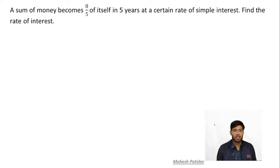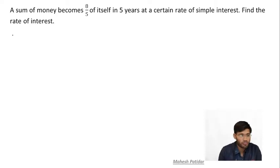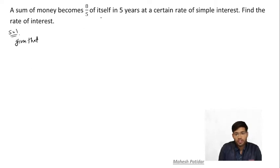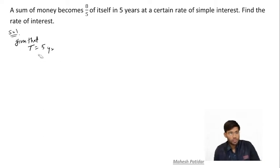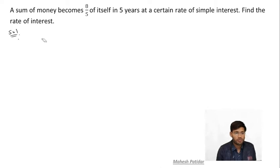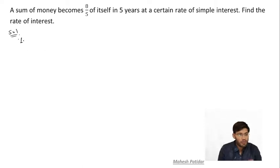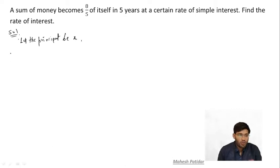Next question: A sum of money becomes 8/5 of itself in five years at a certain rate of simple interest. Find the rate of interest. Solution: Given time = 5 years. Let the principal be X.